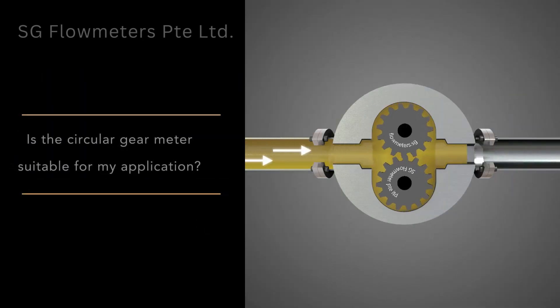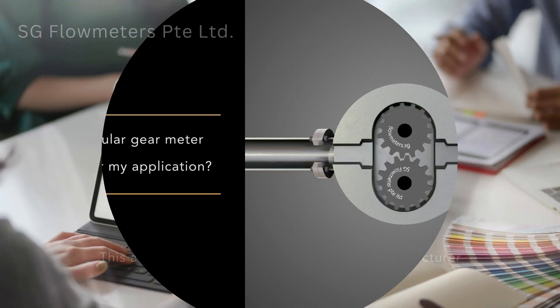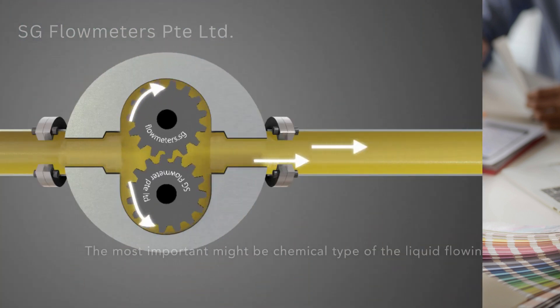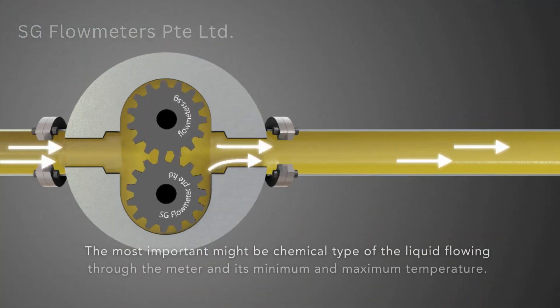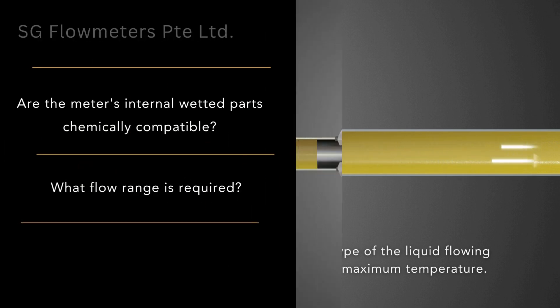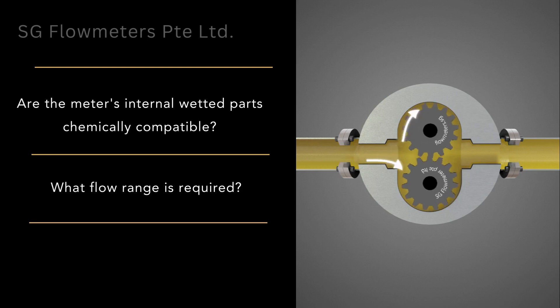Is the circular gear meter suitable for my application? This all depends on a few things that the manufacturer may need to know before making an offer. The most important might be chemical type of the liquid flowing through the meter and its minimum and maximum temperature. Are the meter's internal wetted parts chemically compatible?